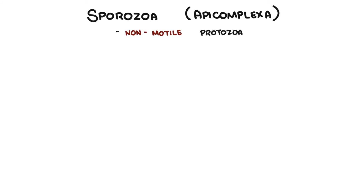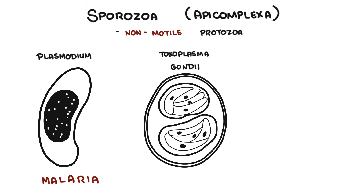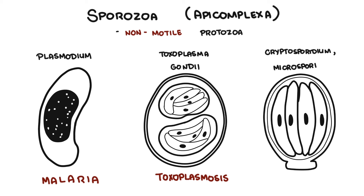The sporozoa, the apicomplexa, do not have any specialized organelles for locomotion — they are non-motile protozoa. Examples include Plasmodium, the cause of malaria, which requires the Anopheles mosquito for transmission. Toxoplasma gondii is a non-motile sporozoan carried by cats, with serious effects in immunocompromised people and the potential to cause congenital defects. Cryptosporidium and Microsporidum cause chronic diarrhea, also in immunocompromised people.